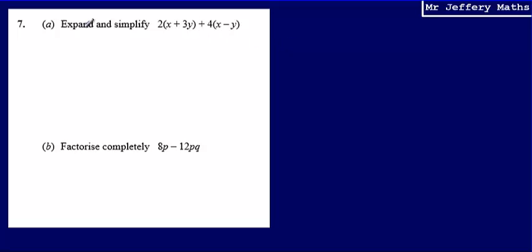This is question 7. We're asked to expand and simplify 2 bracket x plus 3y plus 4 bracket x minus y. To answer this, I'm going to start by expanding these brackets. To expand brackets, all I have to do is take the term on the outside of the brackets, which in this case is a 2, and multiply it by everything inside the bracket.